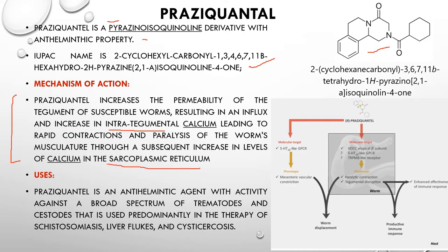When calcium influx increases in the parasite's neurons and muscle cells, rapid contraction and paralysis occur. Praziquantel is an anthelmintic agent with activity against a broad spectrum of trematodes and cestodes, used predominantly in therapy of schistosomiasis, liver flukes, and cystic sarcosis (neurocysticercosis). Students should remember the various worm categories and which drug targets which type.